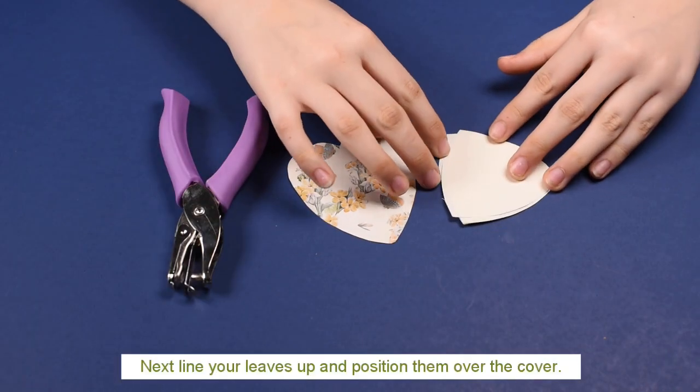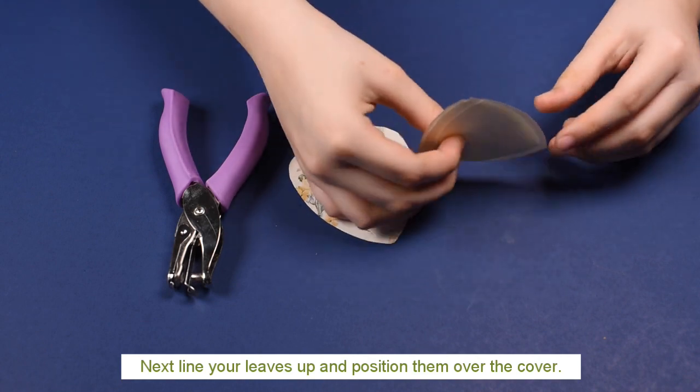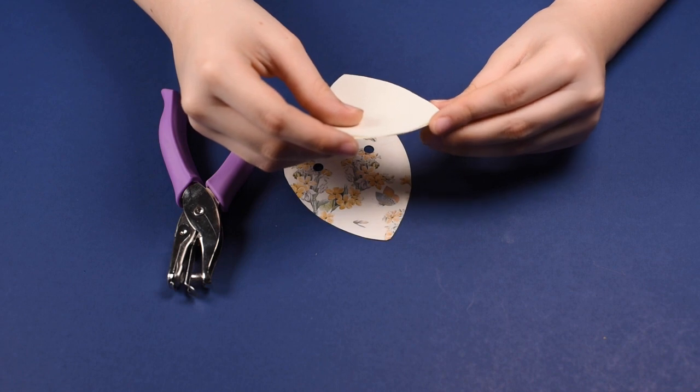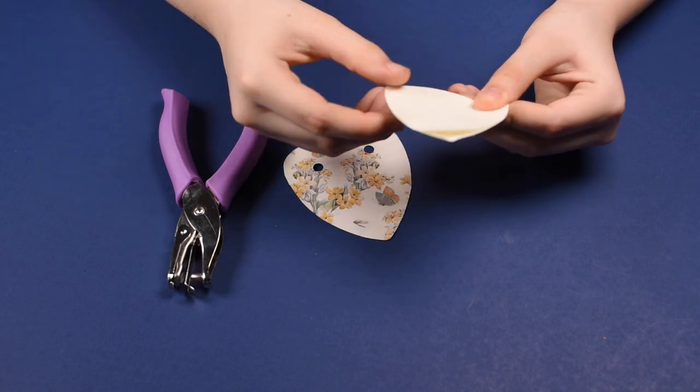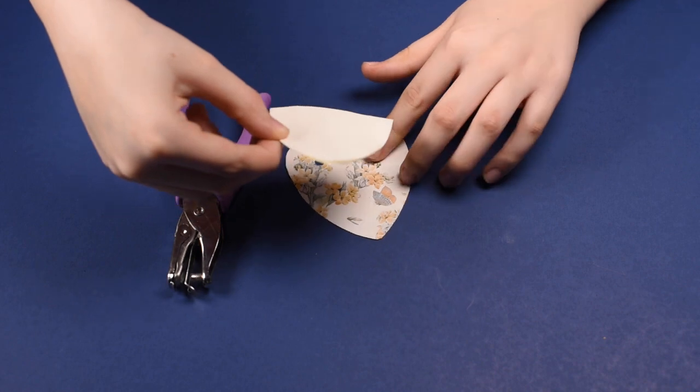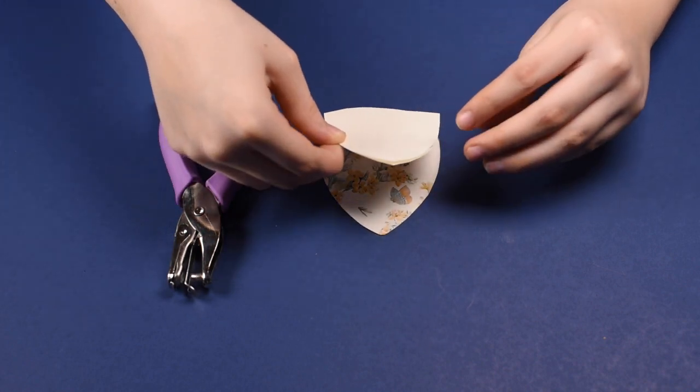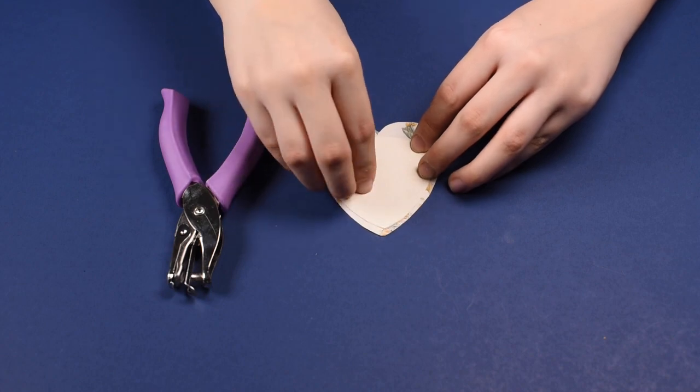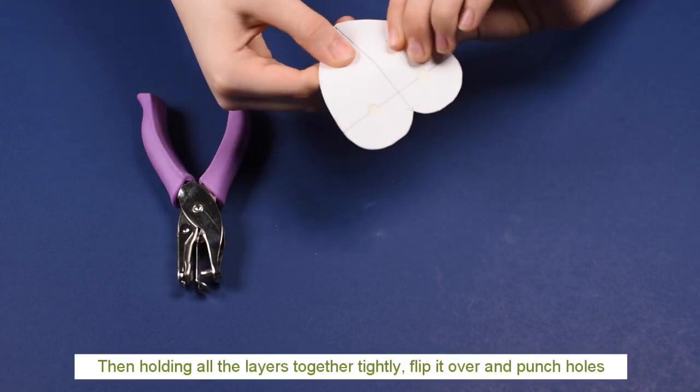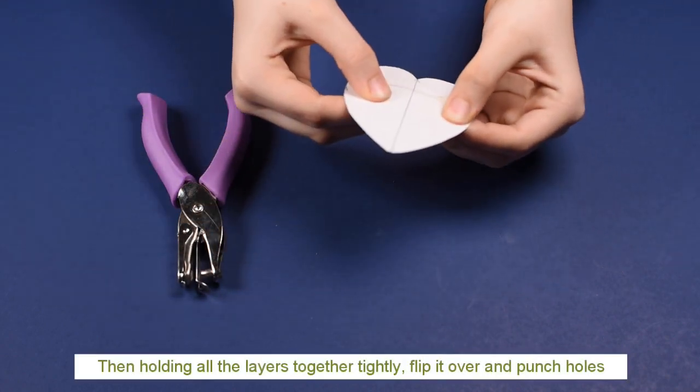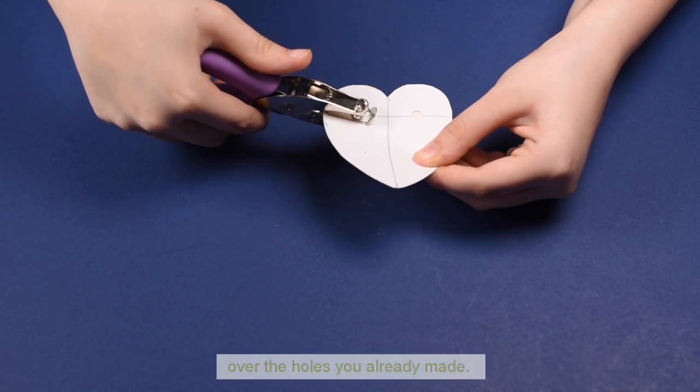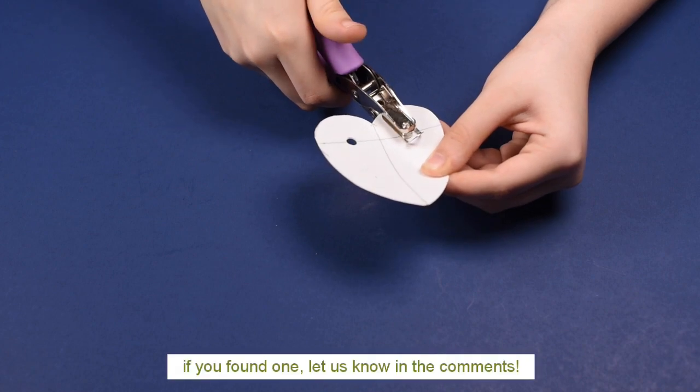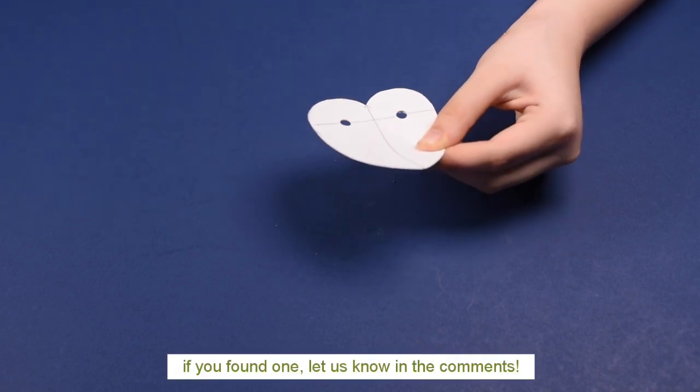Next, line your leaves up and position them over the cover. Then holding all the layers together tightly, flip it over and punch holes over the holes you already made. I'm sure there's an easier way to do this. If you found one, let us know in the comments.